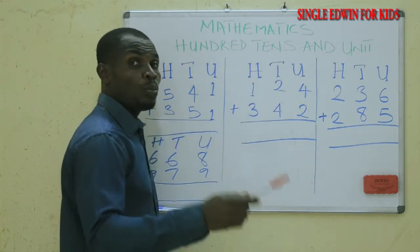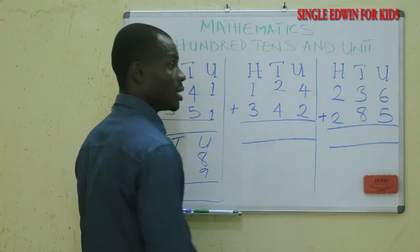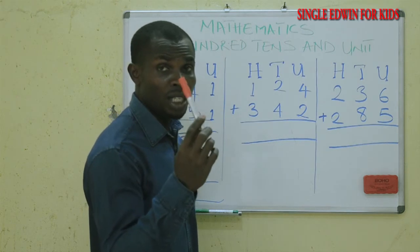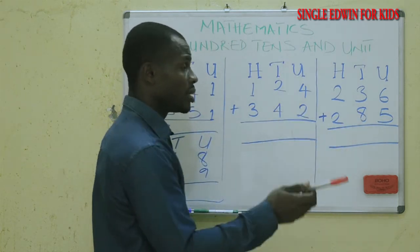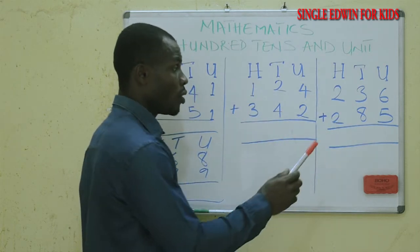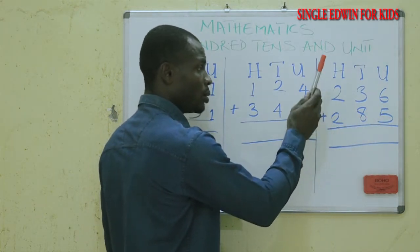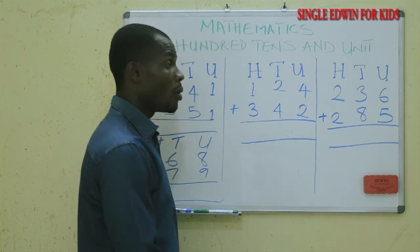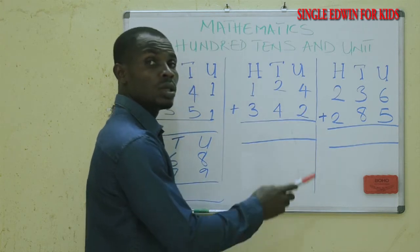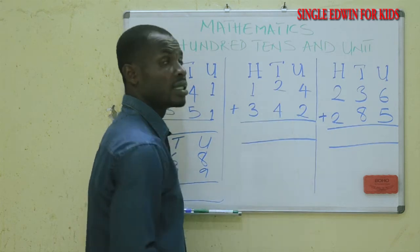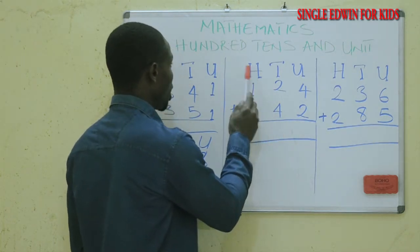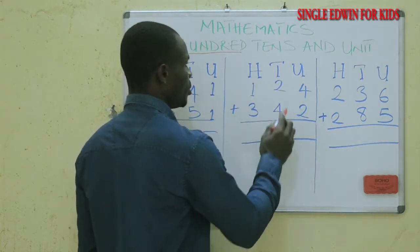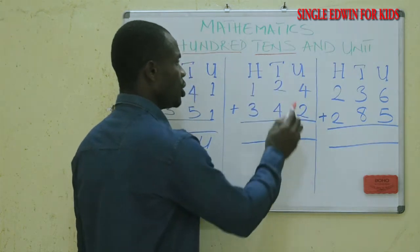The topic of today is Hundreds, Tens, and Units. We calculate from the units to the tens, and from the tens to the hundreds. This H means Hundreds, this T means Tens, and this U means Units.